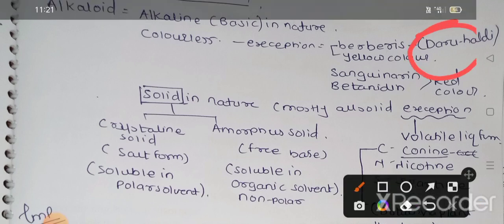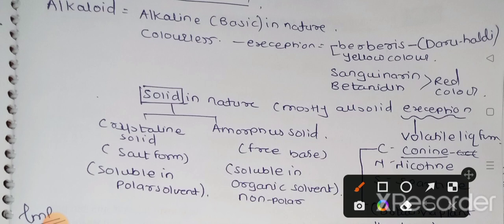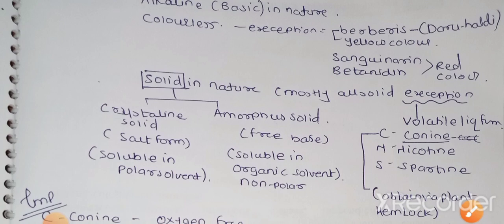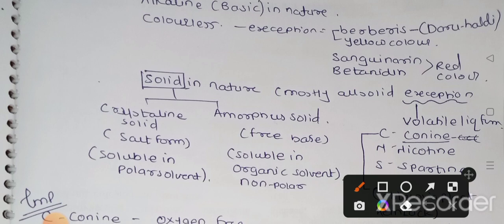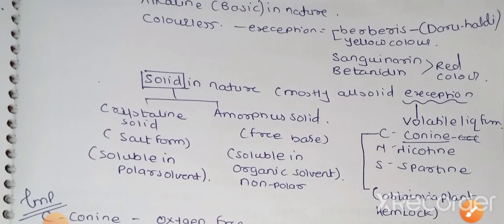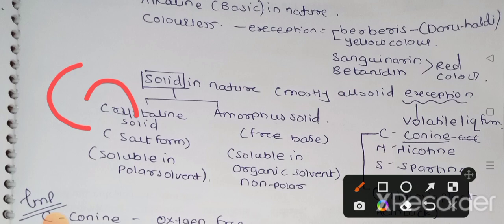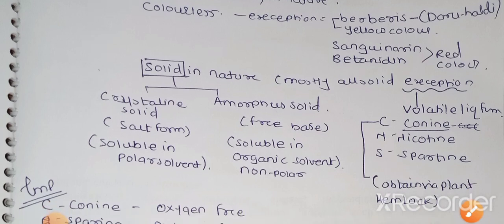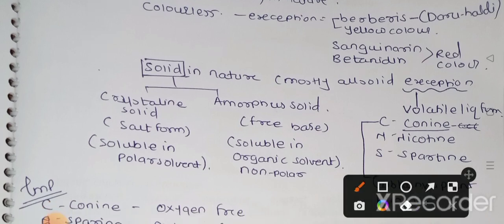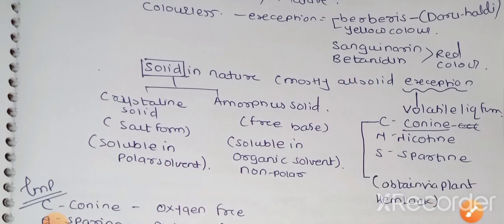So you can remember that alkaloids are mostly crystalline in nature, which is solid in nature. Solids are further classified into two types: crystalline solid and amorphous solid. Crystalline solids are in salt form and soluble in polar solvent. Amorphous solid is free base and soluble in organic solvent and non-polar solvent. You have to remember that solid alkaloids are of two types: crystalline solid and amorphous solid.